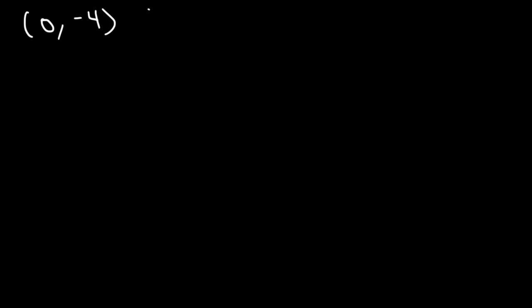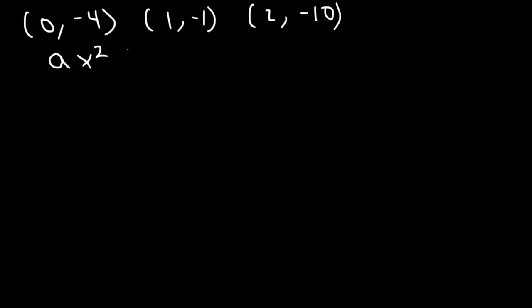Sometimes you might be given three points. Let's say the points are (0, -4), (1, -1), and (2, -10). Write a quadratic equation in standard form. The standard form is ax squared plus bx plus c equals y. We need to find the values of a, b, and c.